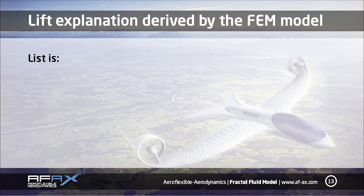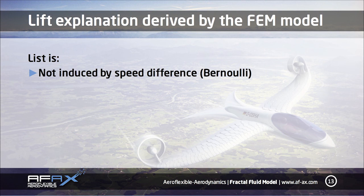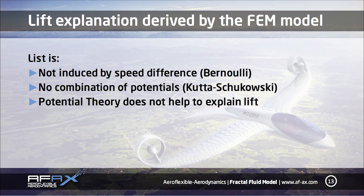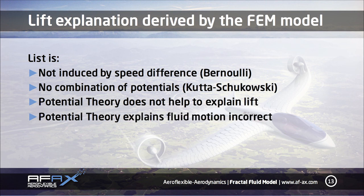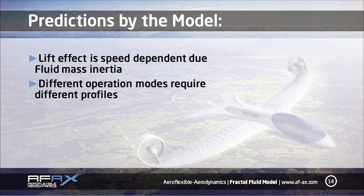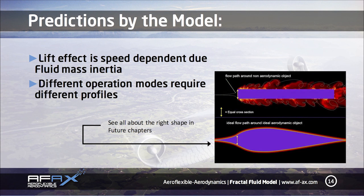In conclusion we can see that lift is less an effect of speed difference as explained with Bernoulli and the potential theory, and also not the combination of several potentials. The potential theory is not really helpful here and, as part of our most central statements, not correct for fluid behavior. Other conclusions from that approach are that the shape of the surface is highly speed dependent — this is also the reason why every aerodynamic operation range requires its own profile shape. We will give those features special attention in later chapters.